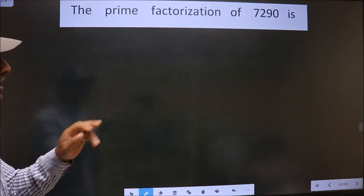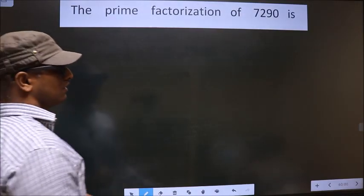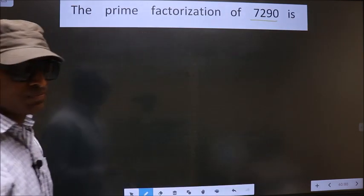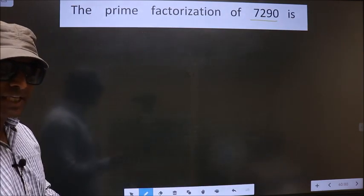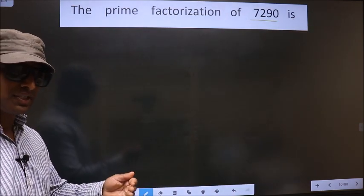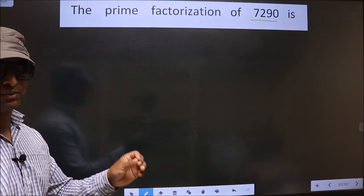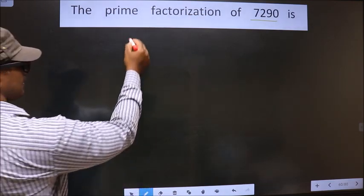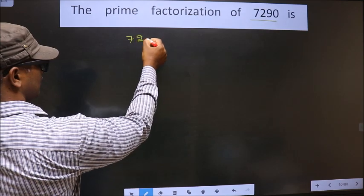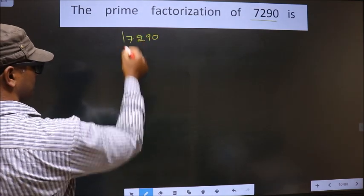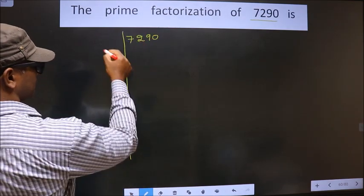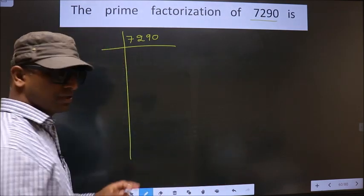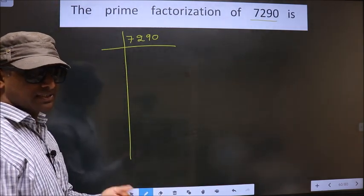The prime factorization of 7290. To do the prime factorization, first we should frame it in this way. That is 7290.